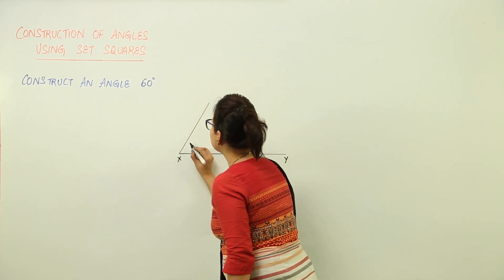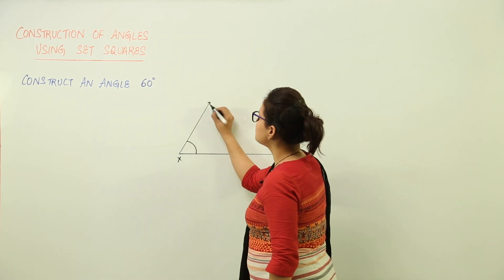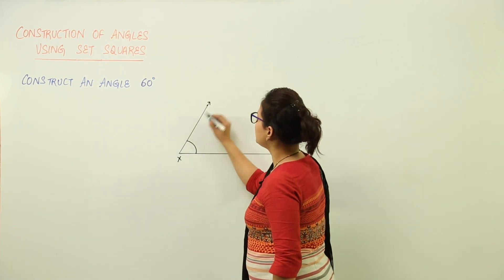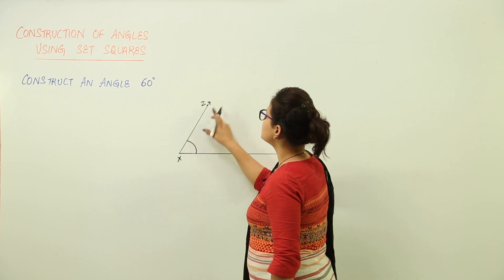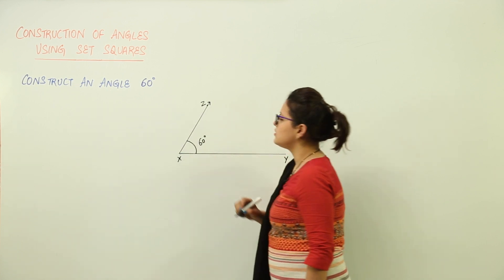So, this point or you can say the vertex here has been formed by making a ray over here. This is ray XZ and the angle that you have made is 60 degrees.